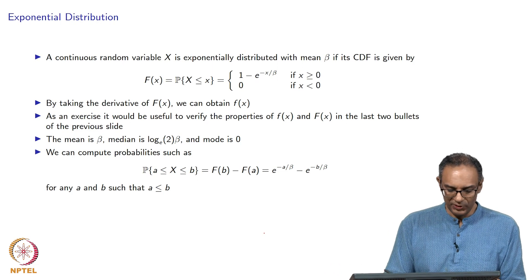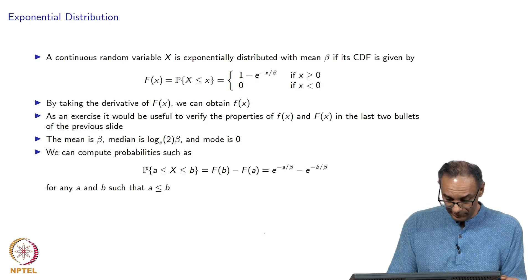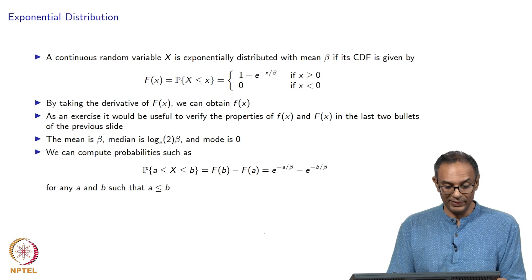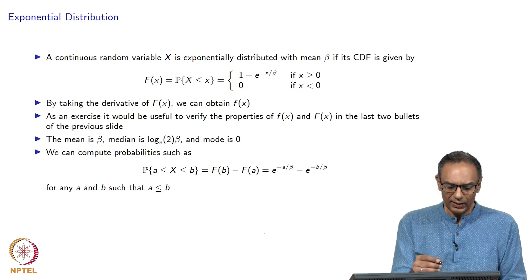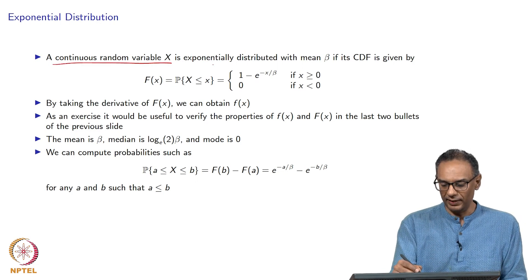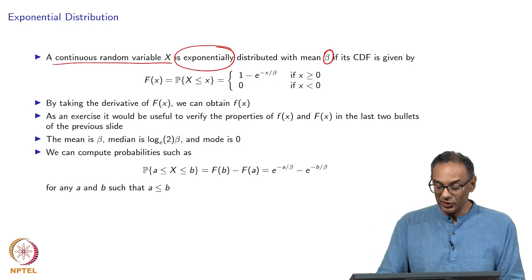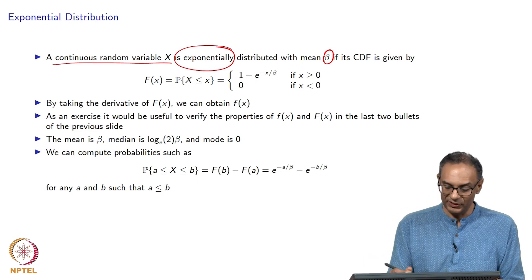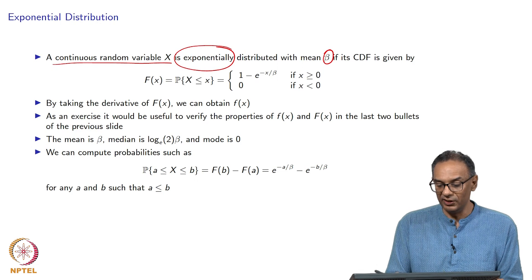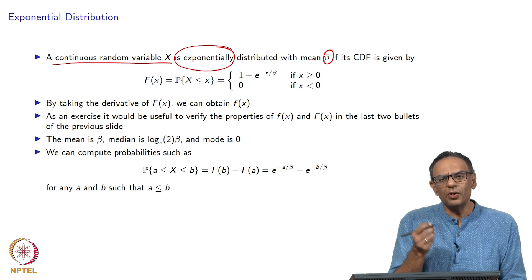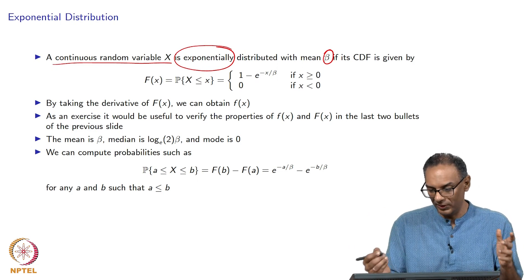Let us look at the exponential distribution, which is very popular in the field of operations research. A continuous random variable x is called exponential with mean beta. Sometimes the parameter is written as 1 over the mean, but in this course we use the mean itself as the parameter, since most software including Octave, R, and others use the mean as a parameter.